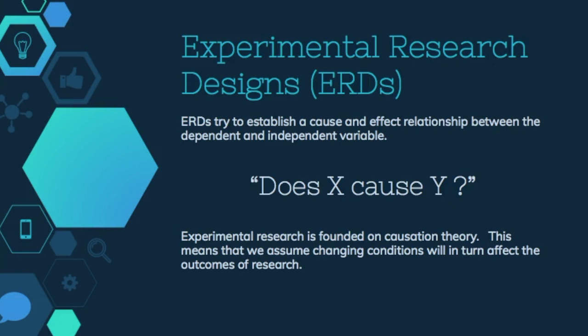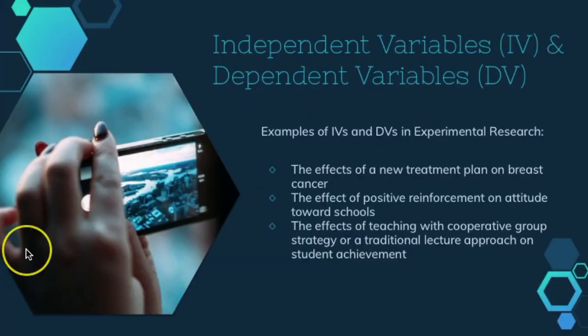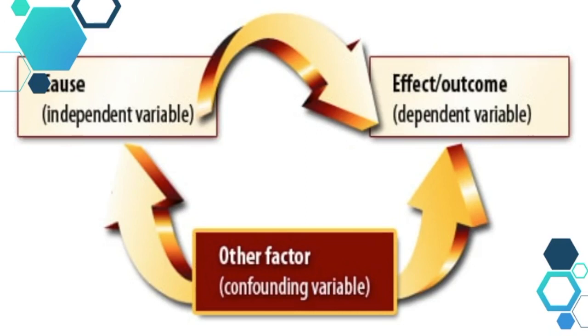Experimental research is founded on causation theory. This means we assume changing conditions will in turn affect the outcomes of research. Listed here are a few examples of independent and dependent variables found in experimental research: the effects of a new treatment plan on breast cancer; the effect of positive reinforcement on attitude towards schools; the effects of teaching with cooperative group strategy or a traditional lecture approach on student achievement. By manipulating the independent variable, a researcher is able to learn a great deal, as well as point to the manipulated variable as the cause for change.